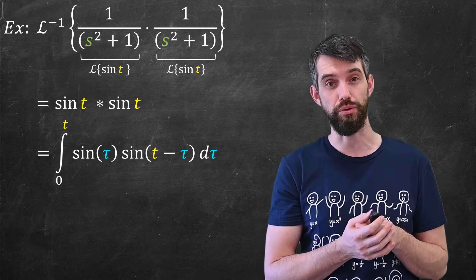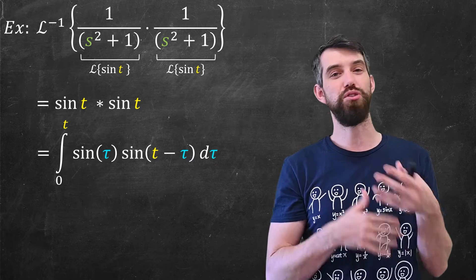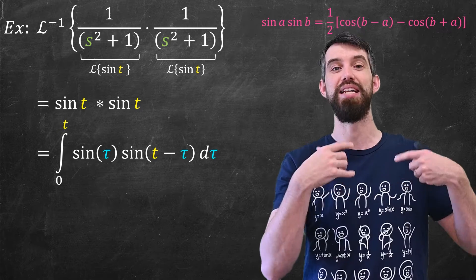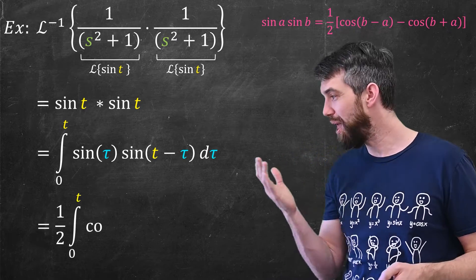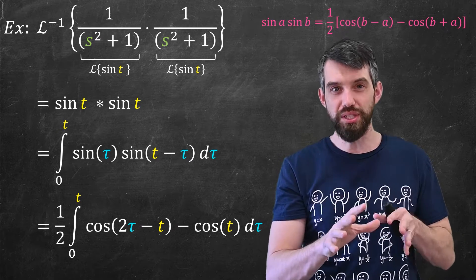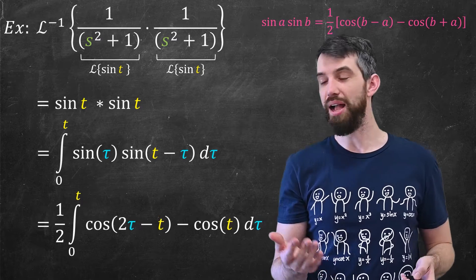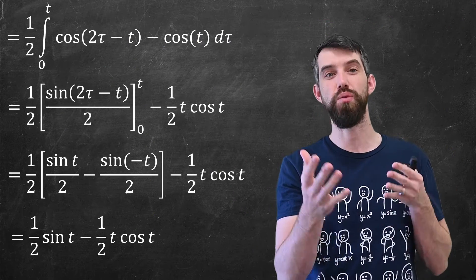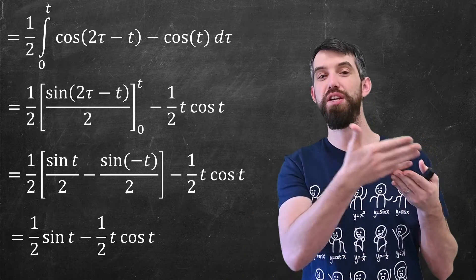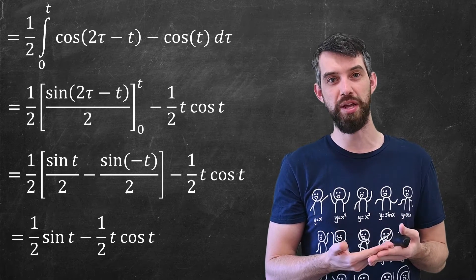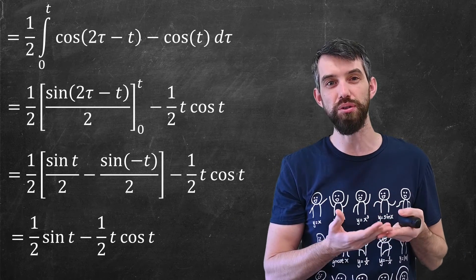Now it's just a computational question: do we know how to compute this integral? There's maybe one trick — these two sines multiplied together have different arguments, one is tau and one is t minus tau, so I want to separate them using the trig identity for the product sine of a times sine of b. Plugging in a equal to tau and b equal to t minus tau gives one half the integral from zero to t of cosine of (2 tau minus t) minus cosine of t, all integrated with respect to tau — and that's an integral you know how to do. So to summarize: we defined the convolution, noted its algebraic properties, and showed that the inverse Laplace transform of a product is computed by evaluating the convolution integral.